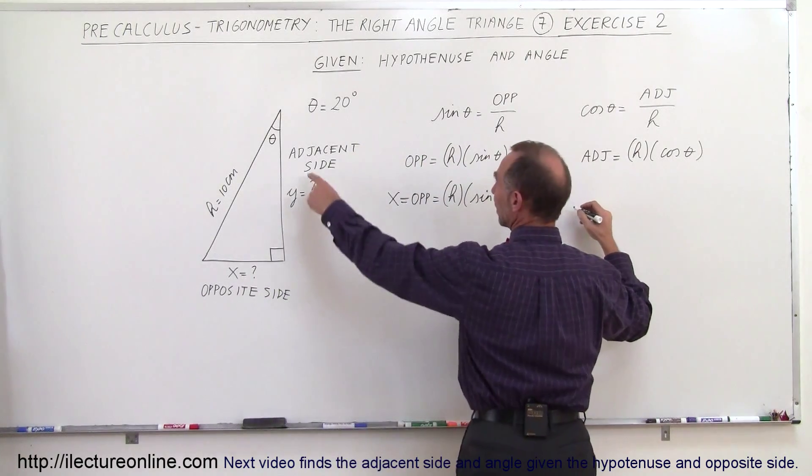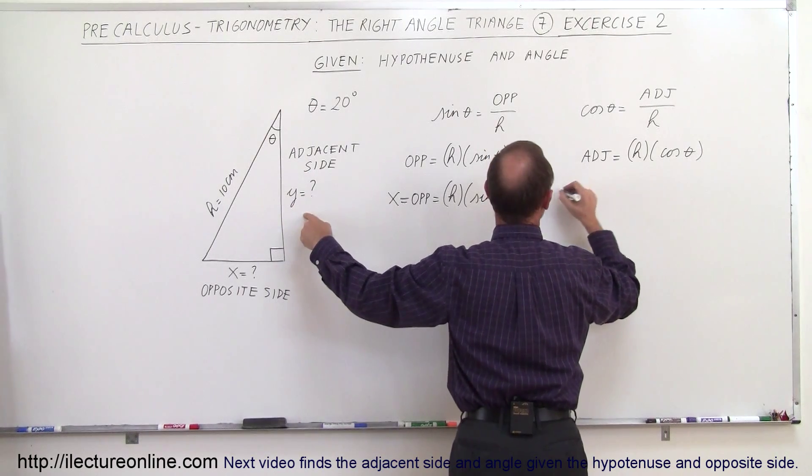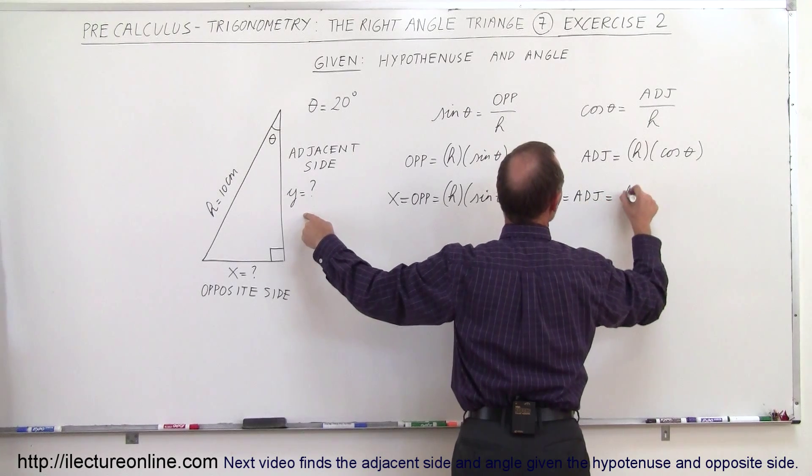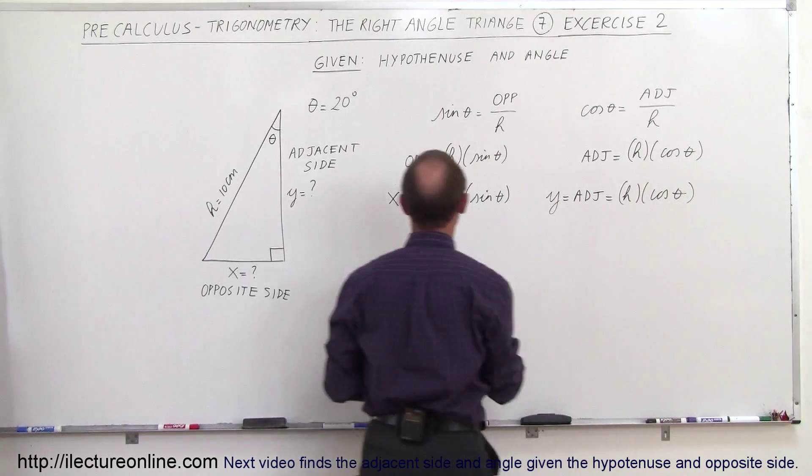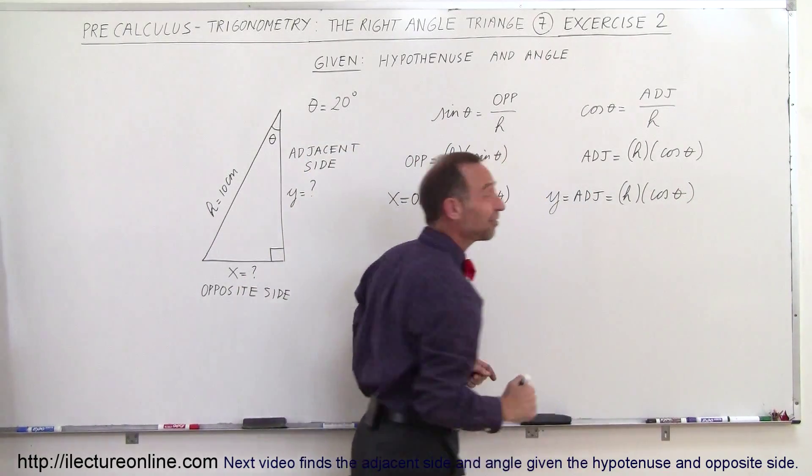And here we can say that the adjacent side which is y is equal to H, the hypotenuse, times the cosine of the angle theta. So here you can see that x is associated to the sine of theta, y is associated with the cosine of theta.